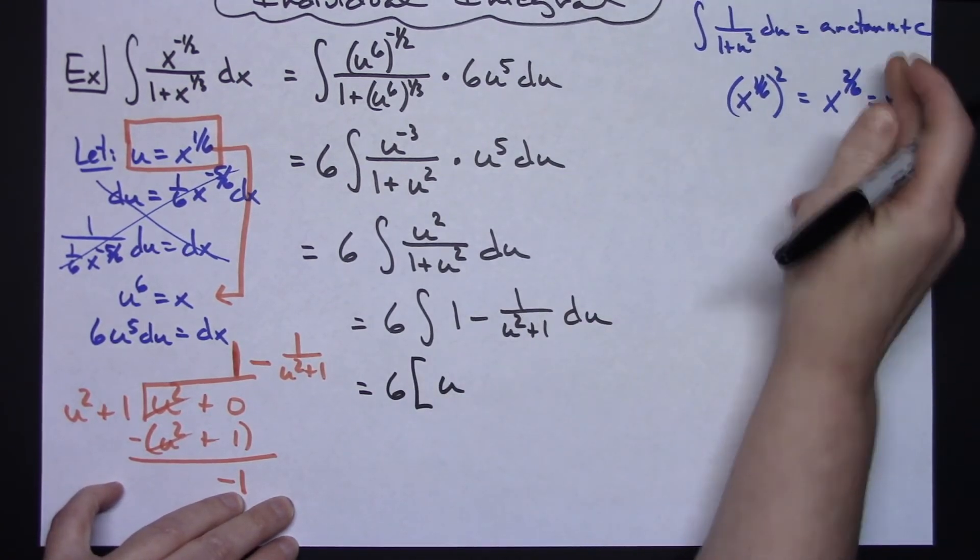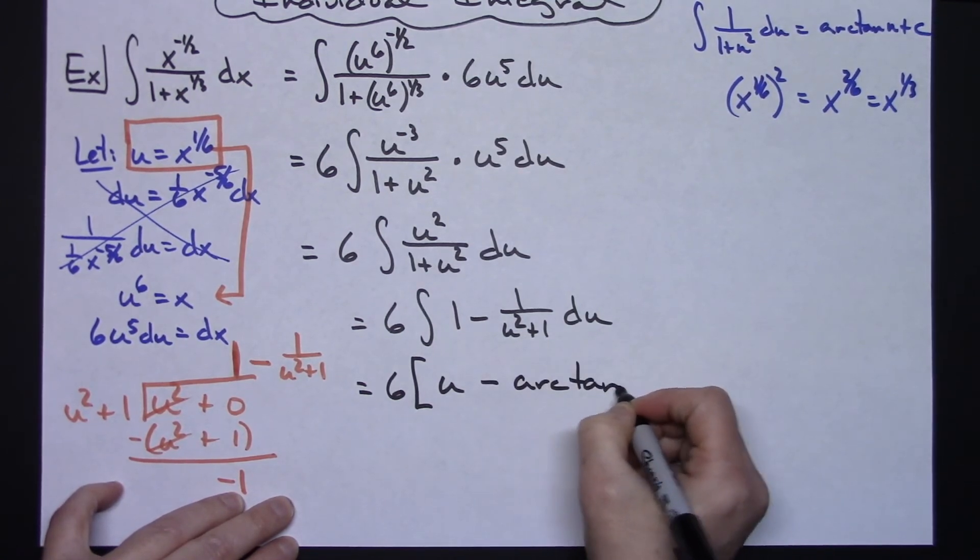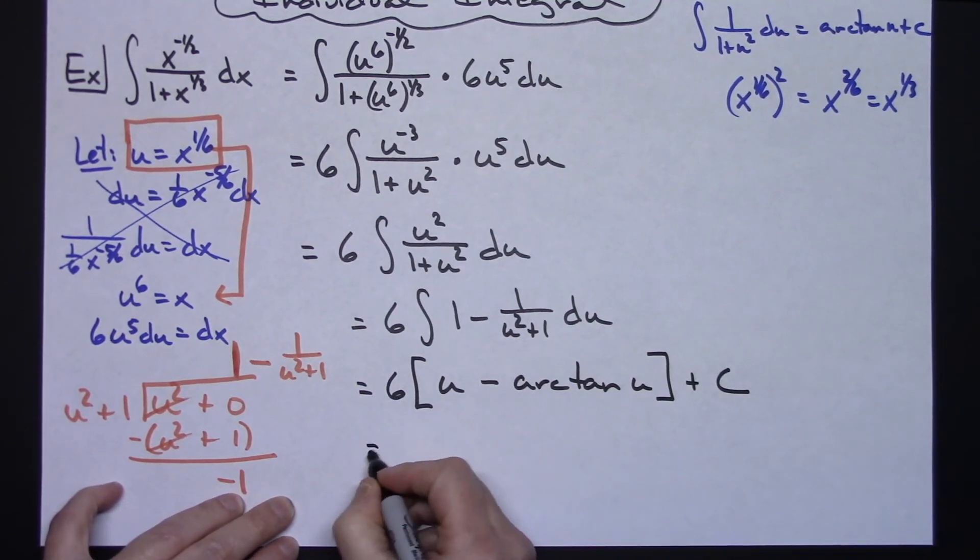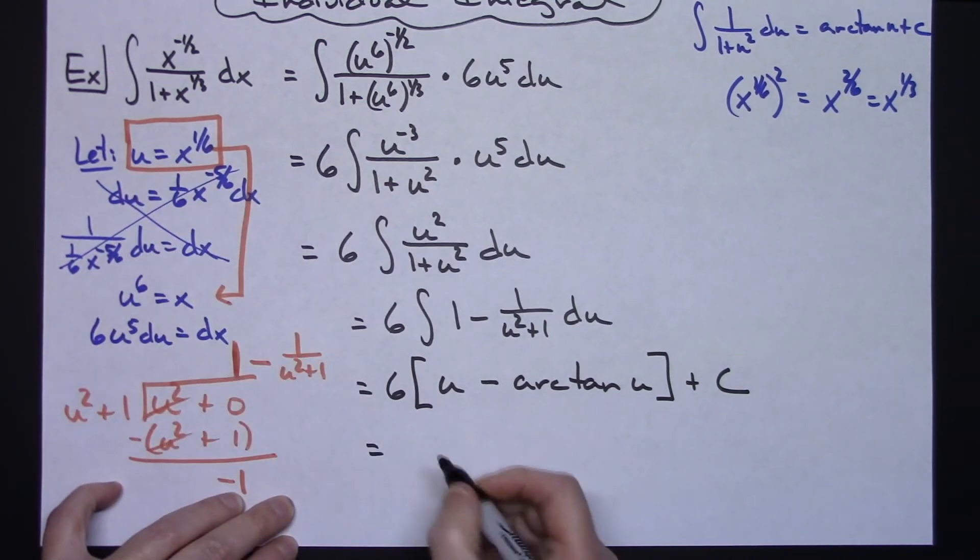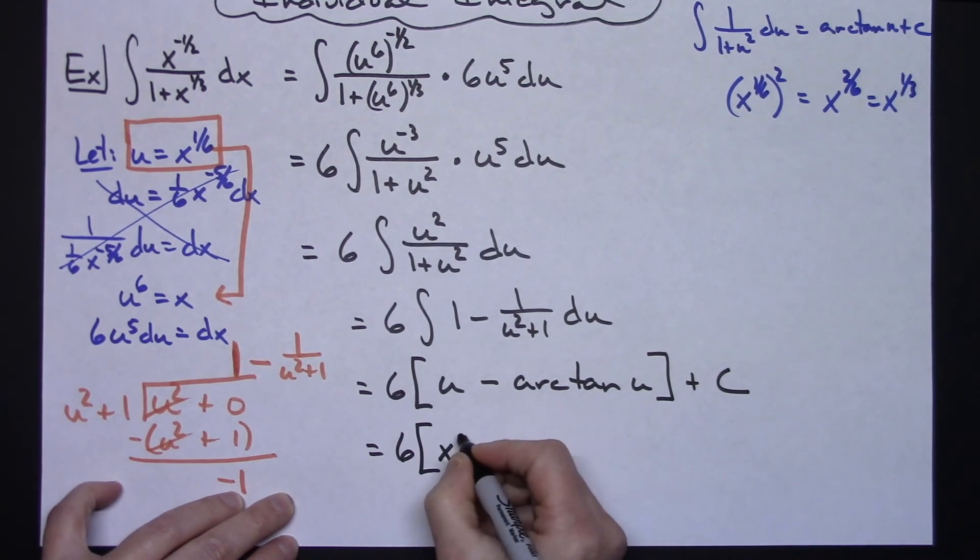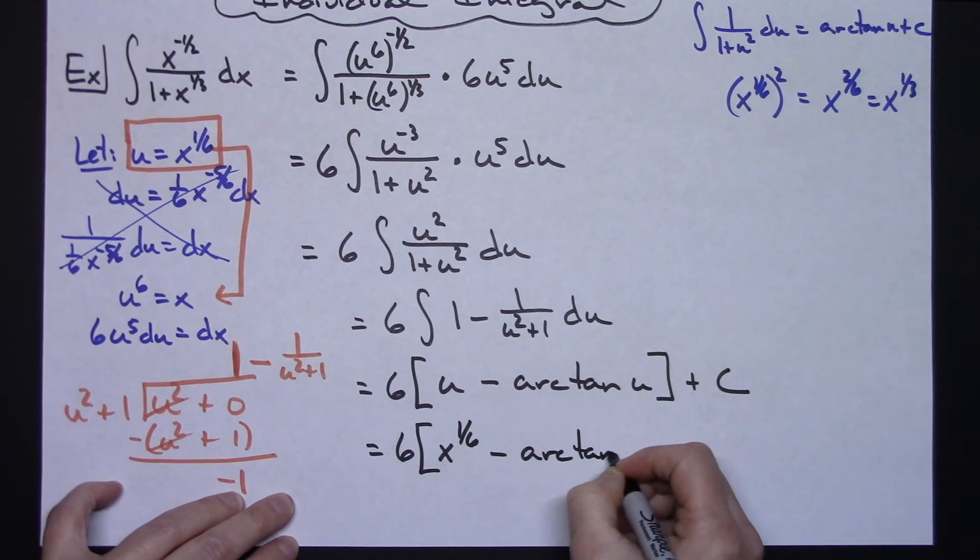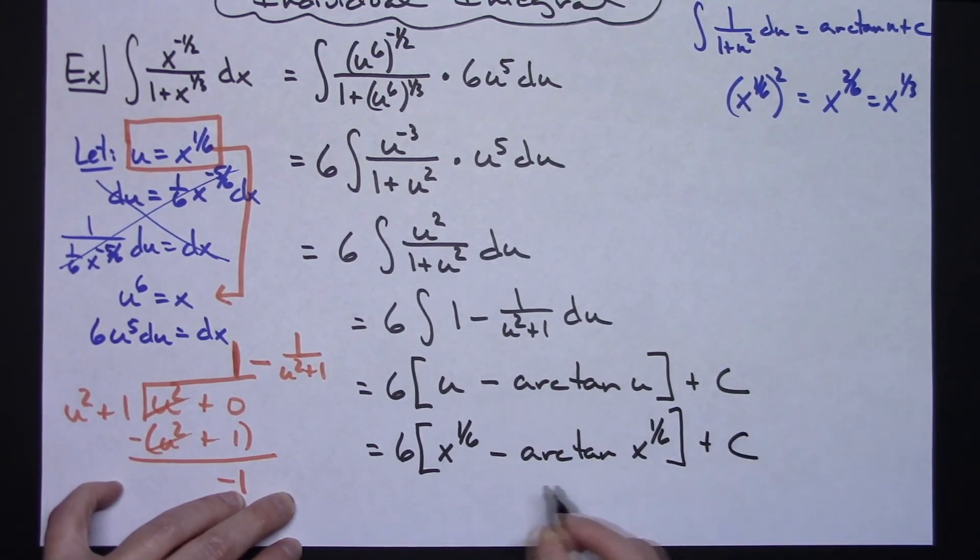I can integrate 1 with the du is going to give me a u really easily and quickly there. So 6 with a u. We know this is arctangent u. So minus arctangent of u and then plus c. And now I can replace what we said u was. Originally I said u was going to be x to the 1/6. So that's what we want to replace it with.